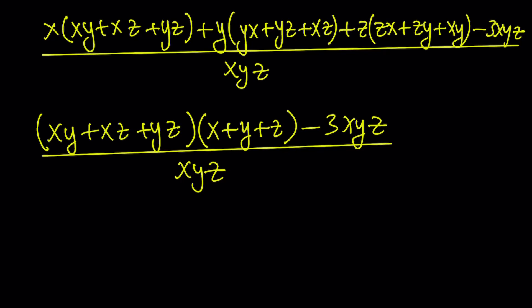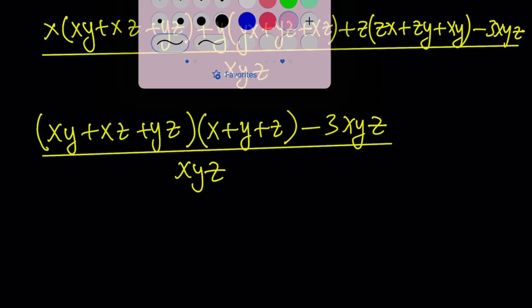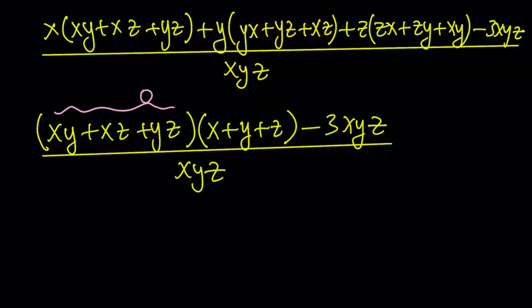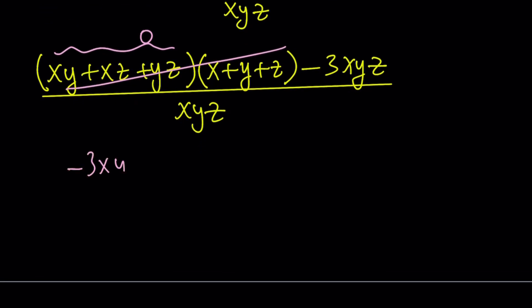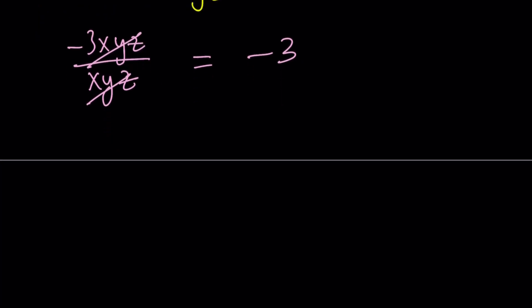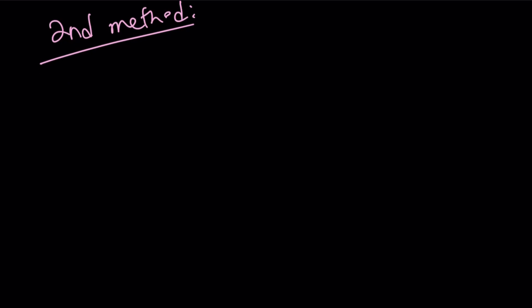Now notice that xy + xz + yz is equal to zero. Therefore, this term is going to cancel out. We're going to end up with -3xyz divided by xyz. And the xyz cancels out. And we're left with negative three. Let's go ahead and take a look at the second method now. So we got negative three using the first method. And let's see if we can get the same answer and pretend you don't know the first method.